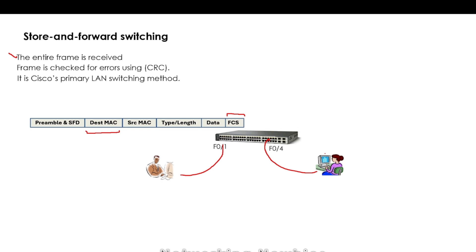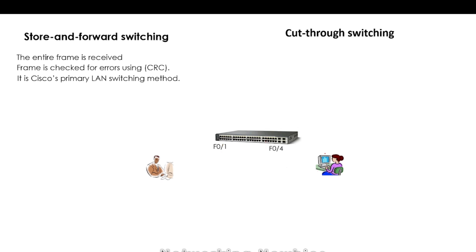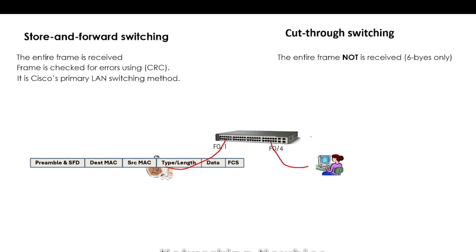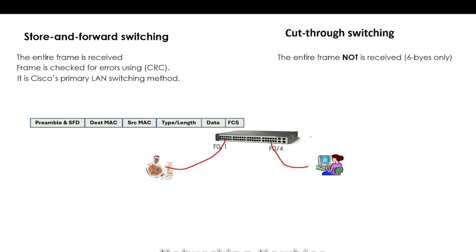In cut-through switching, the switch does not wait for the entire frame to be received. It only waits for the first 6 bytes to get the destination MAC address. It does not check for any errors — as soon as it has received the destination MAC address, it consults its MAC table and starts forwarding the frame. The advantage is speed, but errors are not caught. This is not the primary switching method used by Cisco.